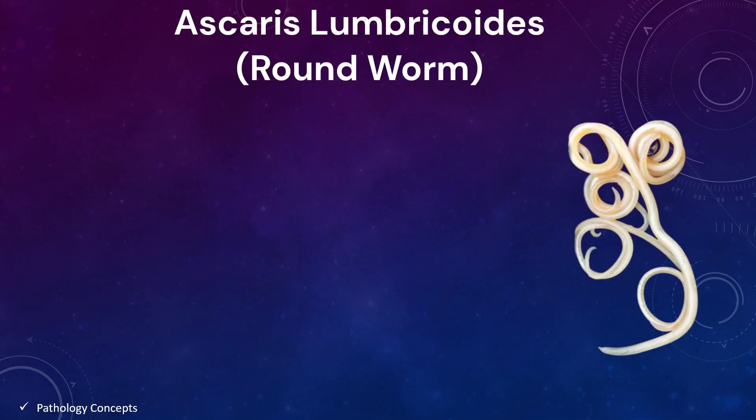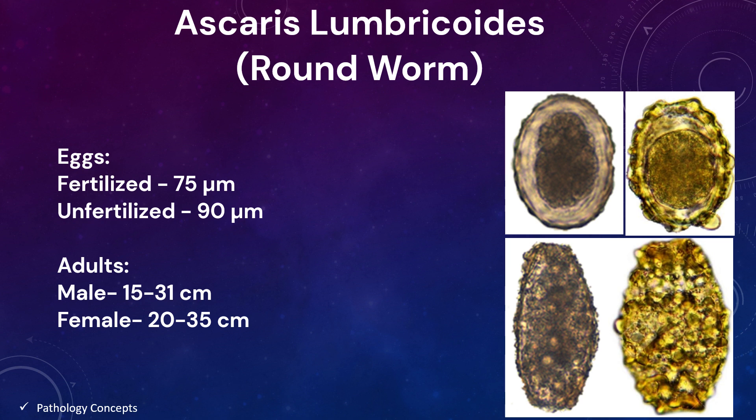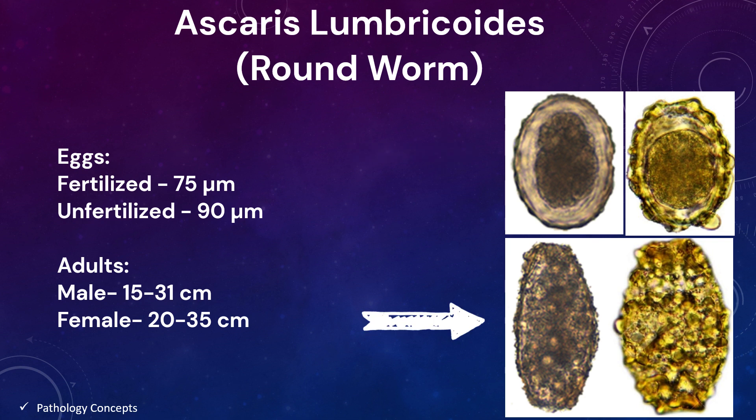Adult worms live in the lumen of the small intestine. A female may produce approximately 200,000 eggs per day, which are passed in the feces. Fertilized eggs are rounded and have a thick shell. Unfertilized eggs are elongated, larger than fertilized eggs, with a thinner shell and larger protuberances.